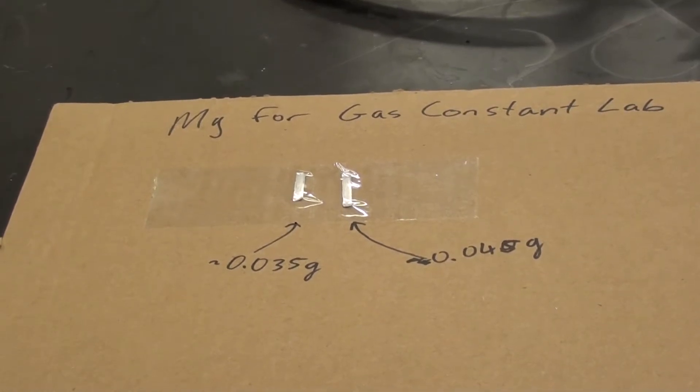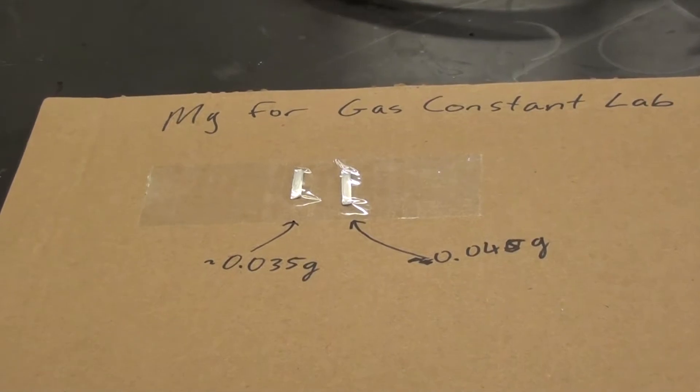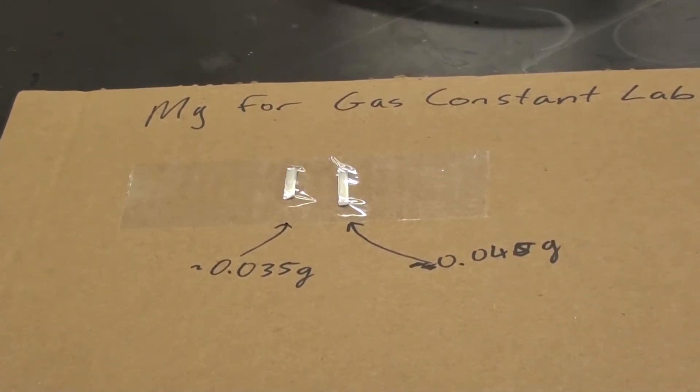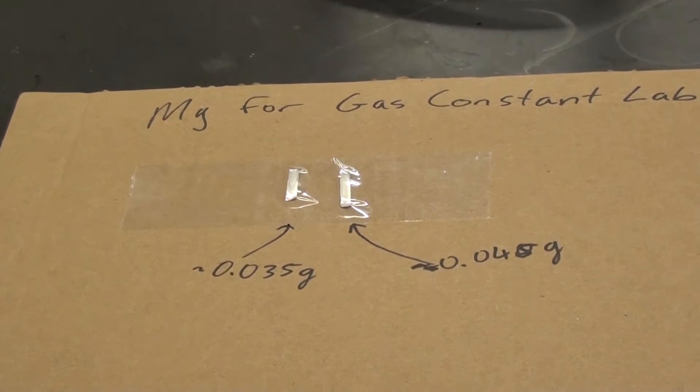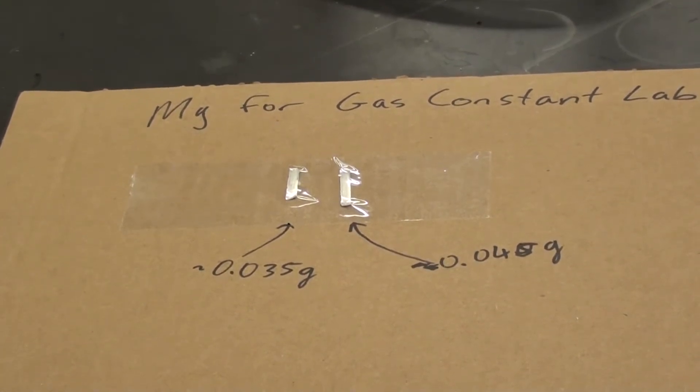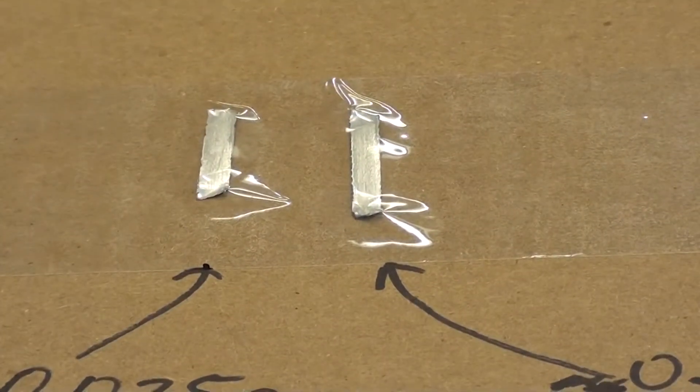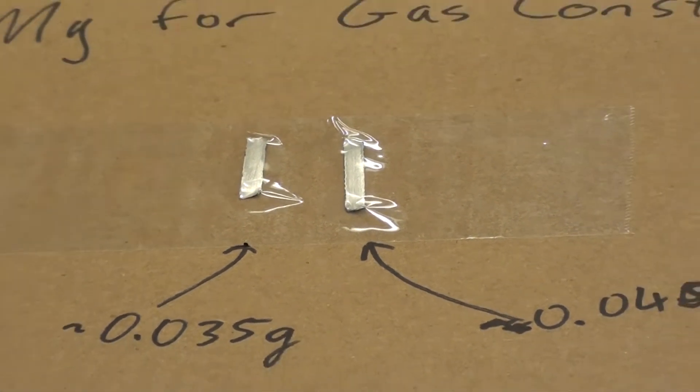This is a setup for the gas constant lab. The first thing we'll be doing is measuring out a piece of magnesium. I've got attached to this cardboard a length of magnesium that weighs about 0.035 grams and another one that weighs about 0.045 grams. We want the mass of our magnesium to be somewhere in between there.